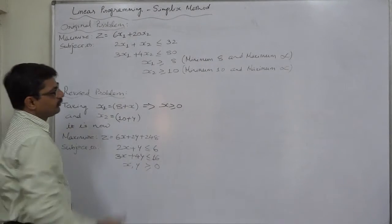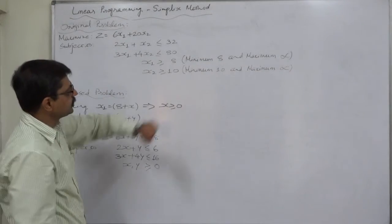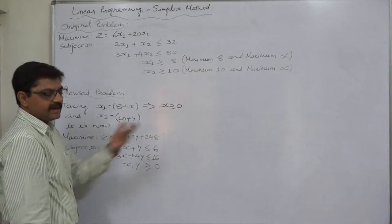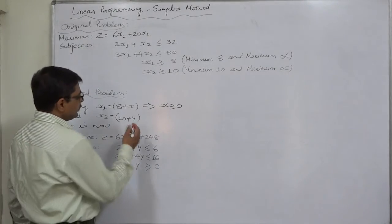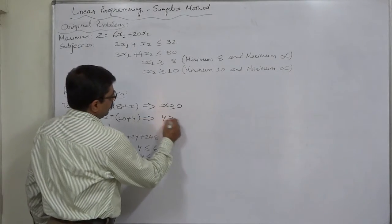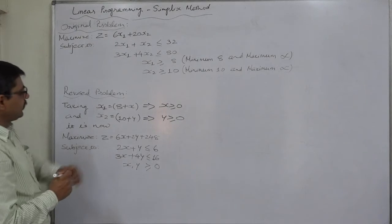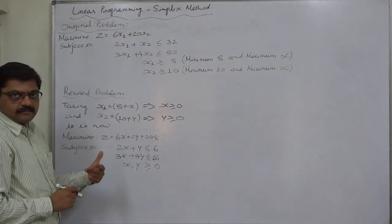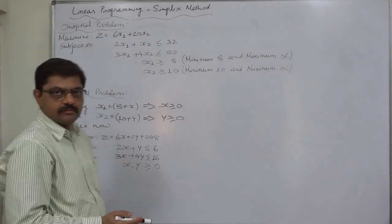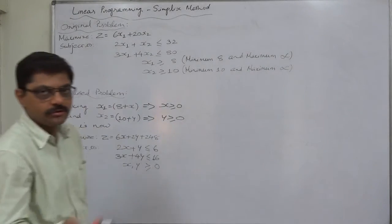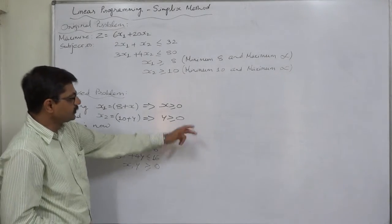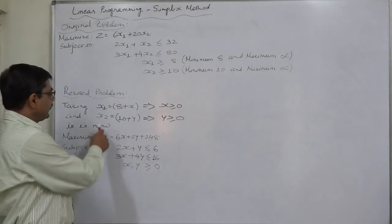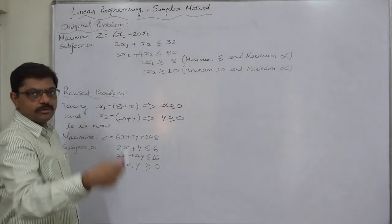Similarly, x2 greater than or equal to 10 that means minimum possible value of x2 is 10 and maximum can be anything. So, let us take x2 equals to 10 plus y, y is greater than or equal to 0, so y can take value from 0 to infinite and hence x2 will be 10 plus 0 to infinite.